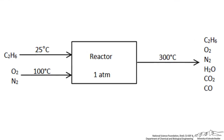We have ethane and air coming into a combustion chamber. The ethane is at 25 degrees Celsius and the air is heated to 100 degrees Celsius prior to entering the reactor. The products leave the chamber at 300 degrees Celsius, including carbon monoxide since the combustion was incomplete. To determine the energy output from this reaction we are going to use the heat of formation method.